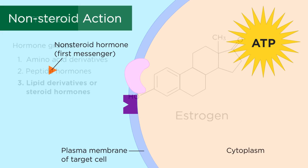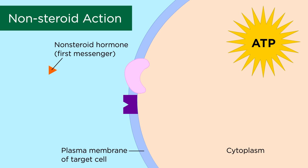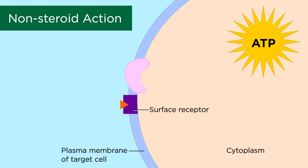There are two main mechanisms for which a hormone can affect a target cell. The first is by a non-steroid action. This mechanism is employed by an amino acid hormone or a peptide hormone. These hormones cannot freely cross a membrane on a target cell, so it first acts by binding a cell surface receptor. There is then an intracellular signaling cascade that occurs in order for the desired effect to take place.